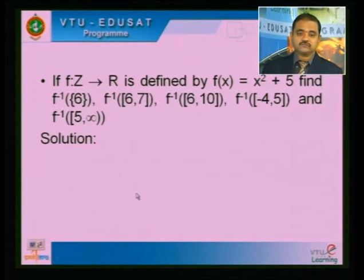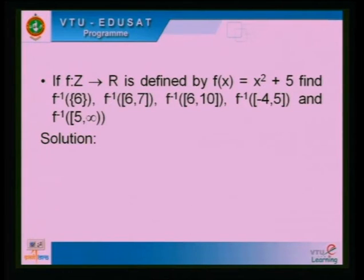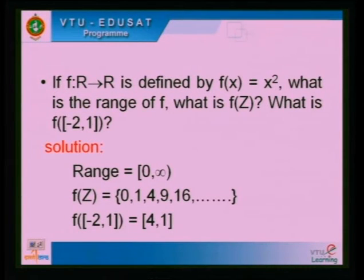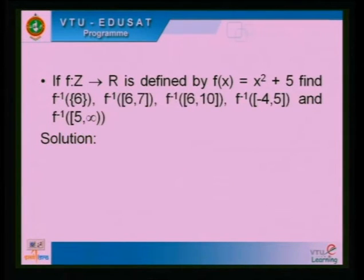Next problem: F is from Z to R defined by F(x) = x² + 5. Find F⁻¹({6}), F⁻¹({6, 7}), F⁻¹({6, 10}), F⁻¹({−4, 5}), and F⁻¹([5, ∞)). In previous problems we calculated F values (range); here the reverse — given a value in R, find its pre-image in Z.